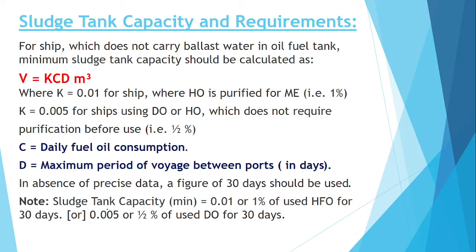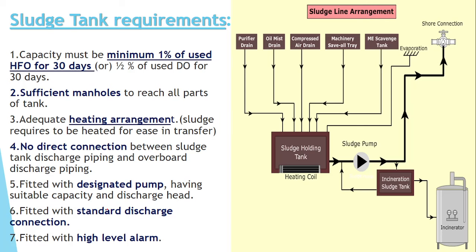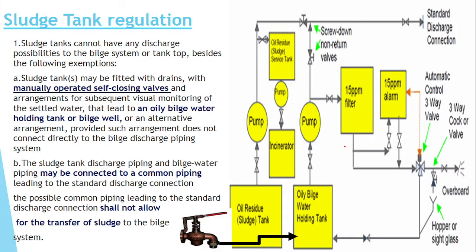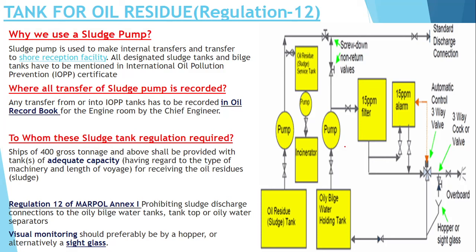I hope in today's video you have learned what should be the sludge tank capacity using the formula, what are the requirements for a sludge tank, and whether we can transfer from the sludge tank to the bilge water tank — yes, we can, with a manually operated self-closing valve. Can we have a common internal connection? No, we cannot have a common connection between the bilge tank and sludge tank internally. But we can have a common connection for a standard shore discharge, provided there is a screw-down non-return valve in one of the lines. If you think you have gained something from this video, please subscribe and share our video on your social media platform. If you want to clear the exam, join the membership — you will get good exclusive content.